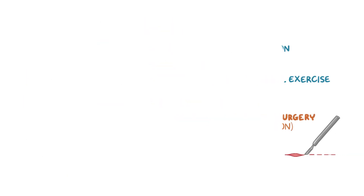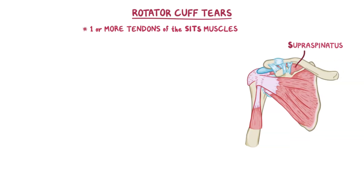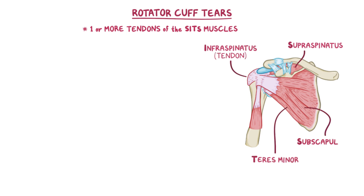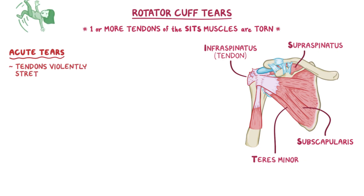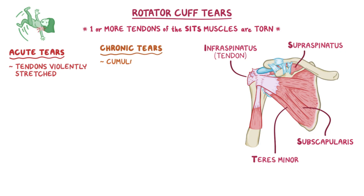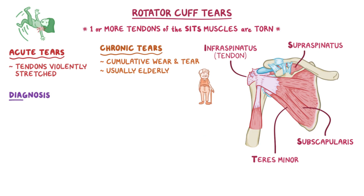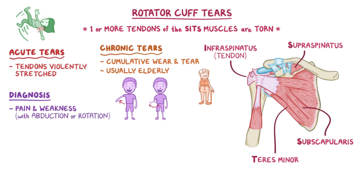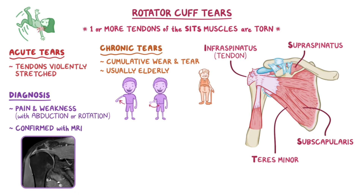As a quick recap: in rotator cuff tears, one or more tendons of the SITS muscles — supraspinatus, infraspinatus, teres minor, and subscapularis — of the rotator cuff are torn. Acute tears happen when the tendons are violently stretched, like falling on an outstretched arm. Chronic tears result from cumulative wear and tear on the tendon, and usually occur in the elderly. Diagnosis is mainly based on pain and weakness, specifically with abduction or rotation, and can be confirmed with an MRI. Treatment involves rest, ice, and pain control, but if that fails, surgery may be needed.